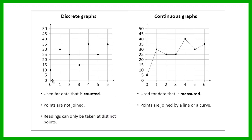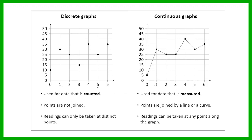In a discrete graph, you can only take readings at specific points — for example, at the independent variable values of 0, 1, 2, 3, and so on. Whereas in a continuous graph, you can take a reading anywhere on the graph — for any value on that axis. I could take a reading at 0.5, which would give a value of about 17.5. If I take a reading at 2.5, it would be 25. So you can take readings anywhere on a continuous graph, which you can't do on a discrete graph.